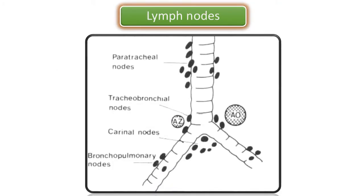This image shows the common mediastinal lymph nodes. When enlarged, they cause paratracheal widening and hilar prominence. The lymph nodes located here include the paratracheal nodes, tracheobronchial nodes, carinal nodes, and the bronchopulmonary nodes.